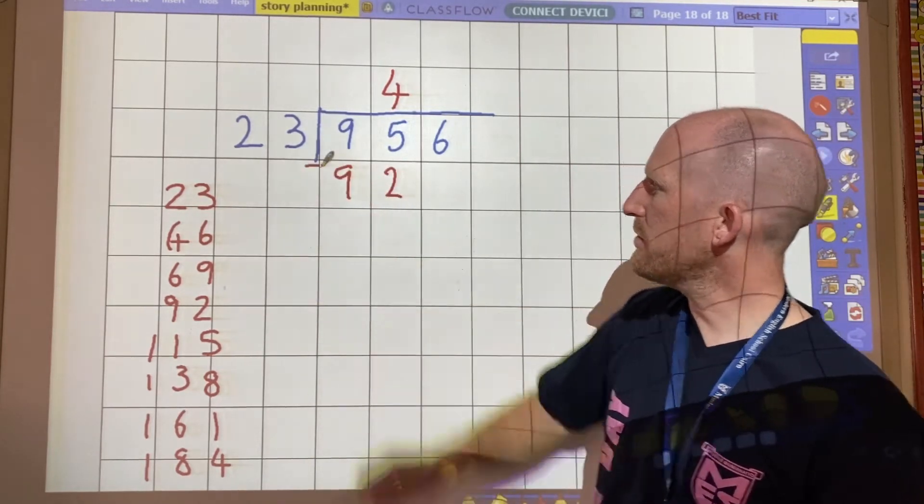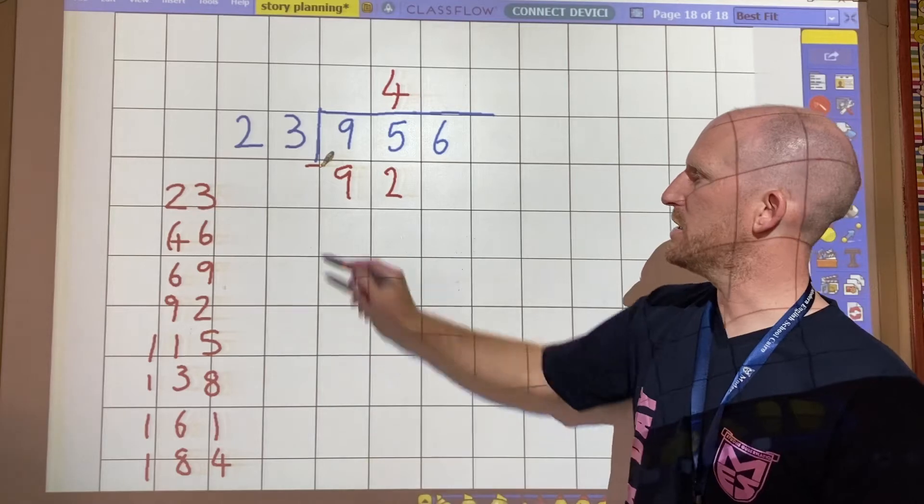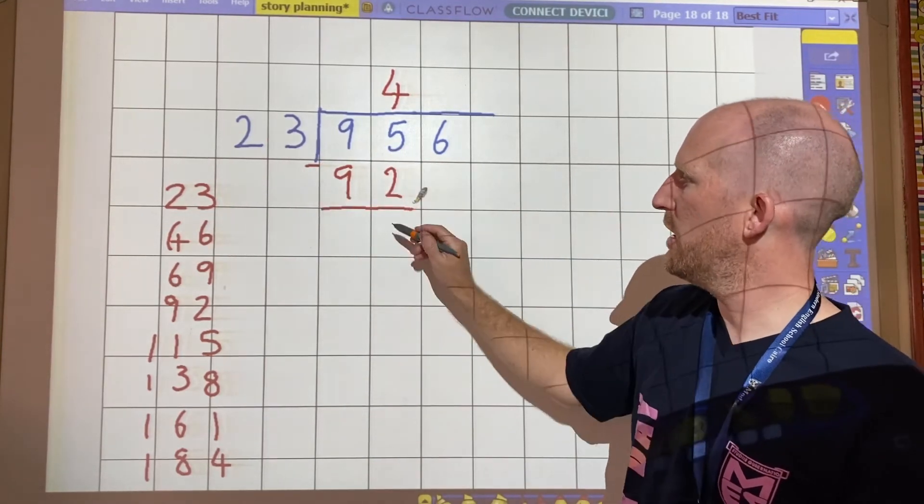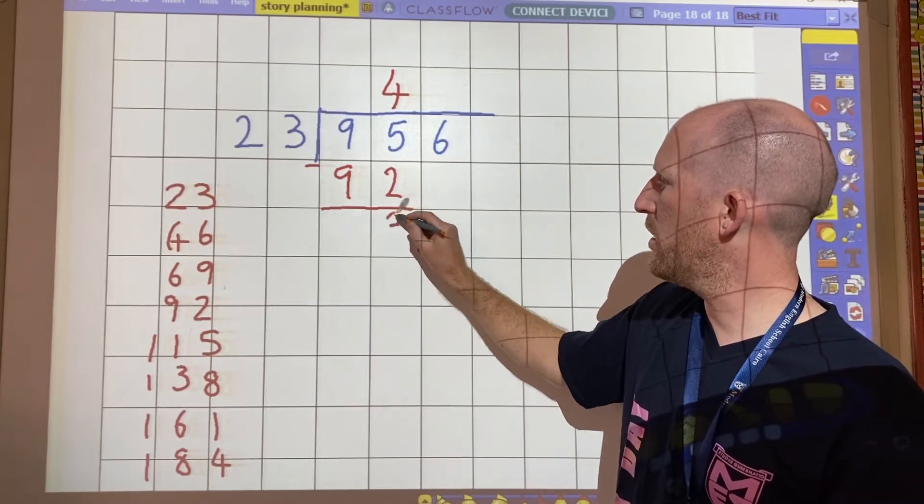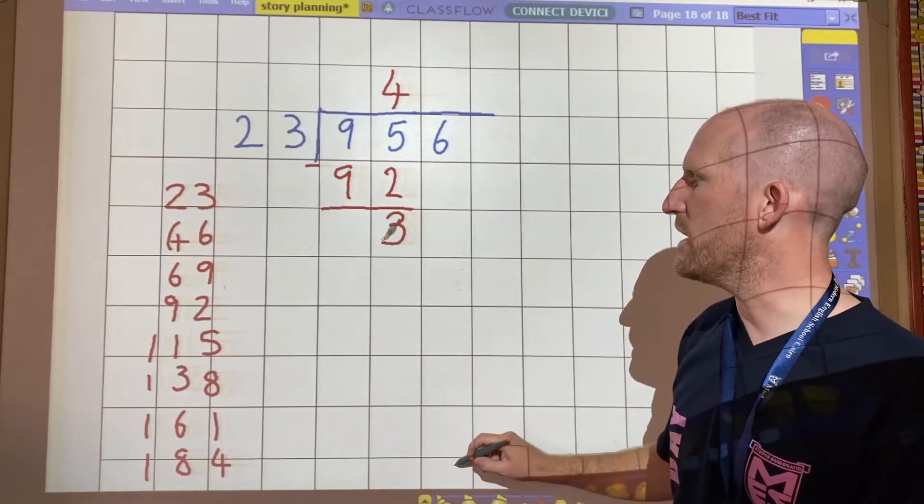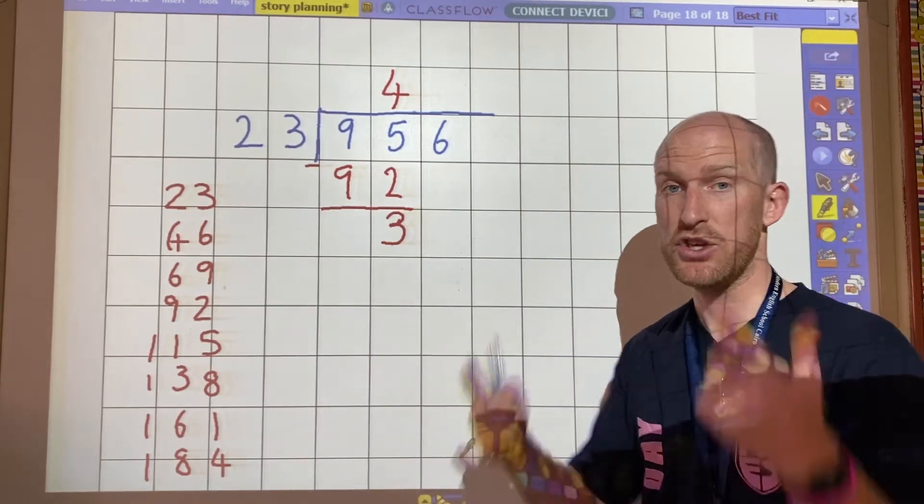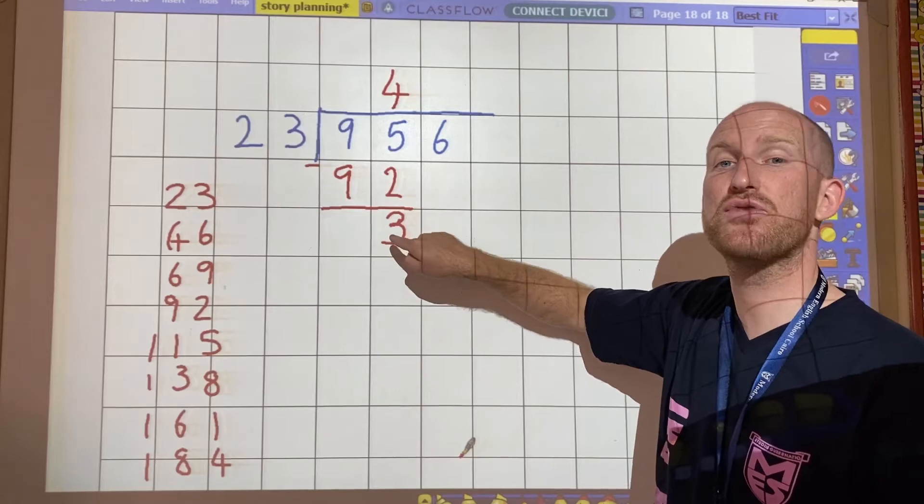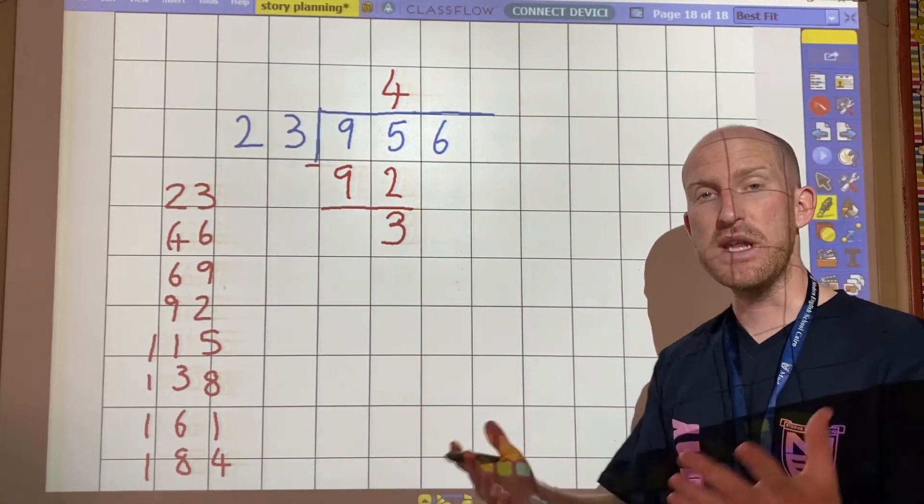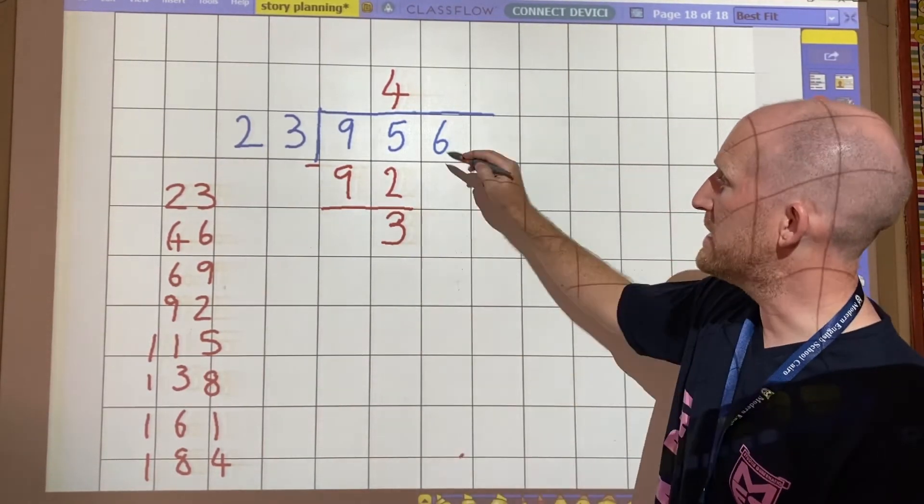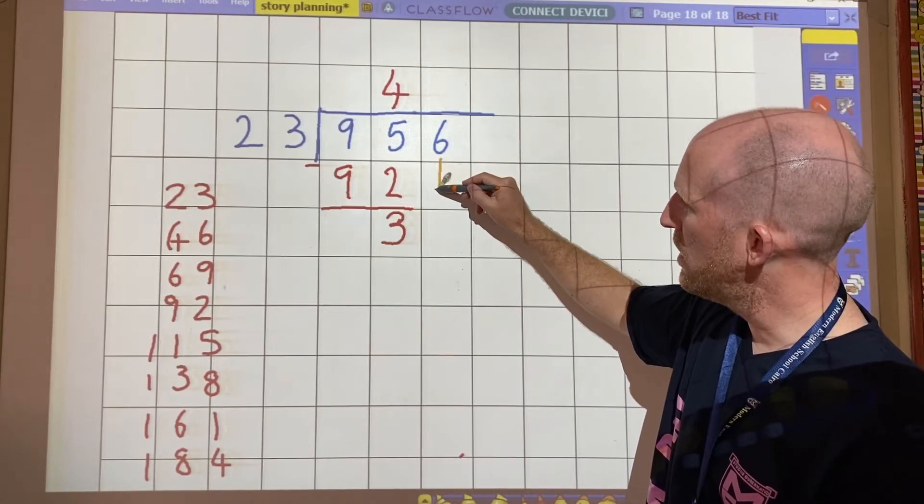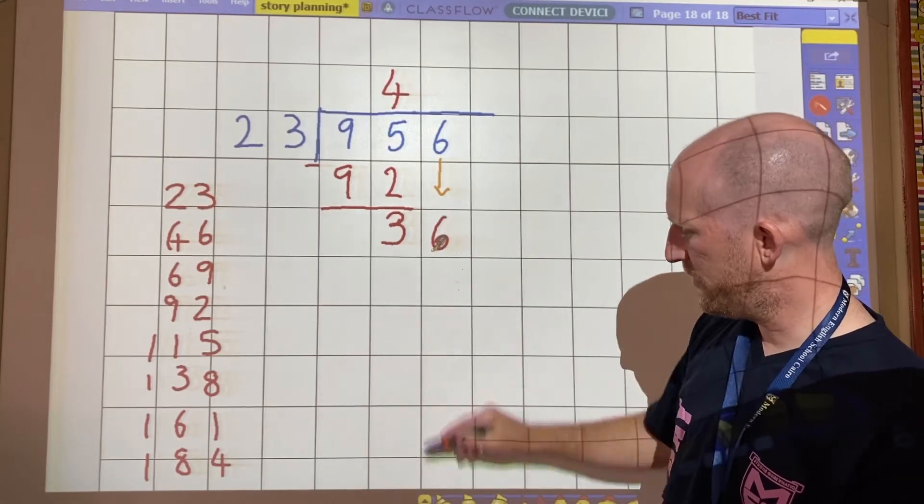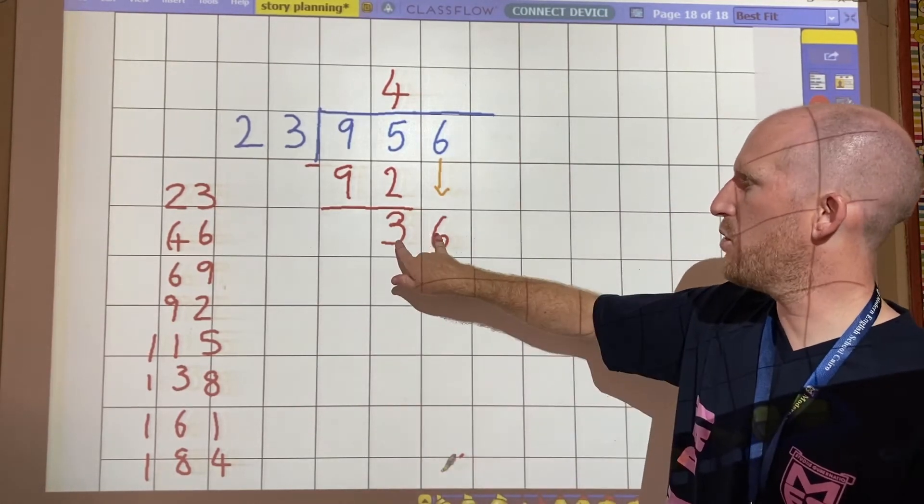92. And all I do is 95 take away 92. And that gives me 3. So that's the remainder. Okay? In short division I would have this in my head but in long division I must write it down. And the next unique thing about long division is that this number now gets brought down and joins the remainder.